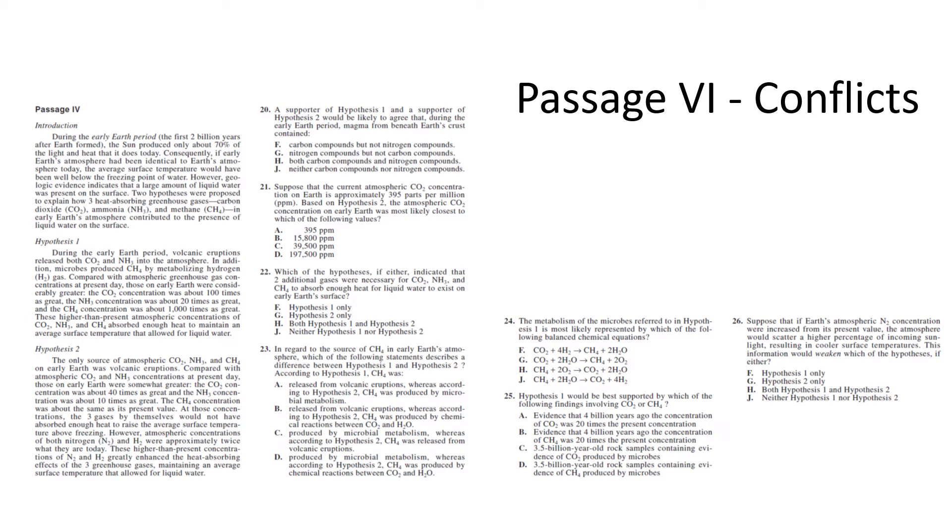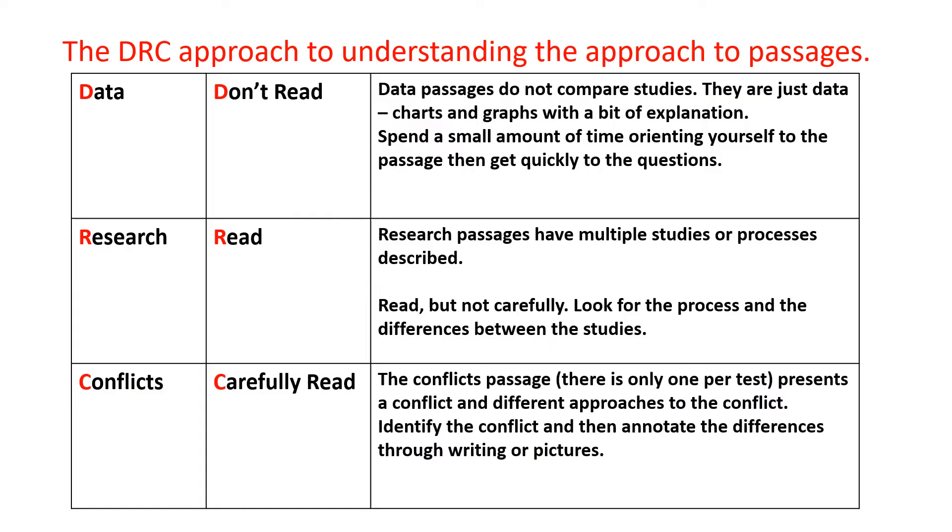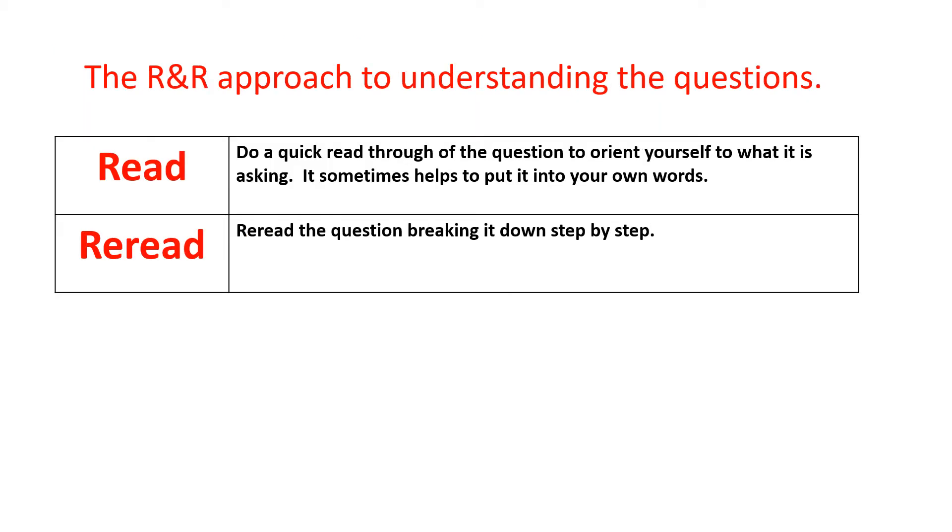Passage six is conflicts. We know this because it says hypothesis one, hypothesis two. This will usually say hypothesis, student, or scientist. So in our DRC approach, C is conflicts. We're going to carefully read and take more time to read this one. We do data or research, we get to the questions. Remember the R&R approach: read the question and then reread it, breaking it down step by step.